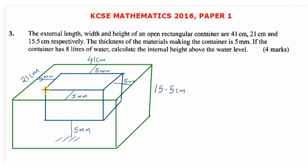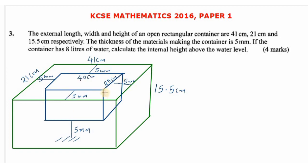We want to determine the dimensions of the internal part. The internal length is obtained by taking the external length minus the distance covered by both wall thicknesses — 5 millimeters plus 5 millimeters equals 10 millimeters, which is 1 centimeter. So the internal length is 41 minus 1 = 40 centimeters. For the width, it is 21 minus 1 = 20 centimeters.